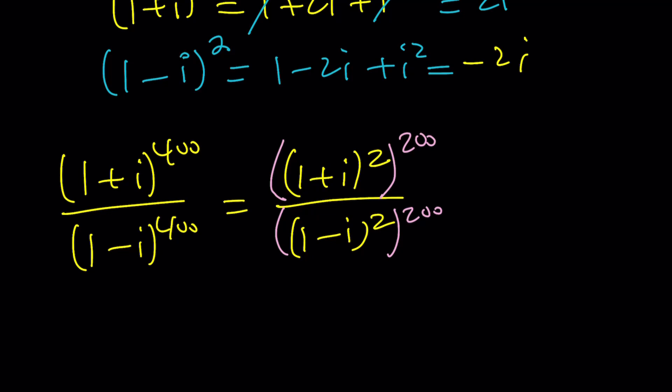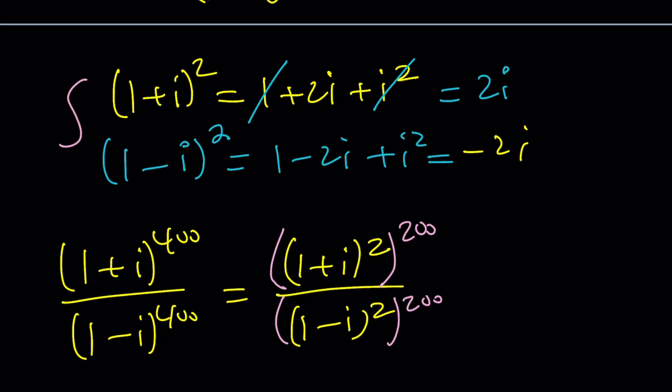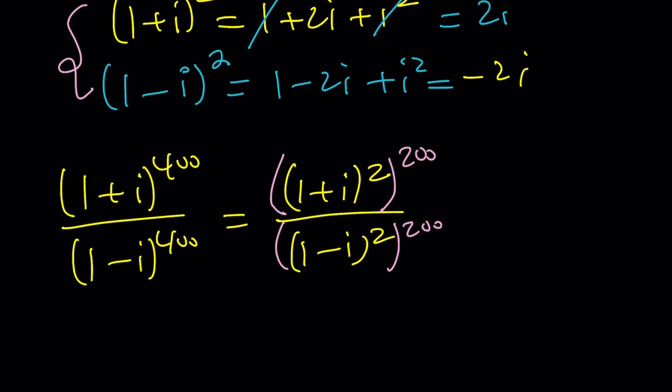Now, 1 plus i squared from here, we know that it's equal to 2i. So if you're dealing with complex numbers for any reason, you should know these because these numbers come up all the time. And there's a way to explain this using polar form too, which might be one of the methods. I don't know. We'll see how much time we have left. Anyways, this is 2i to the power 200, and this is negative 2i to the power 200.